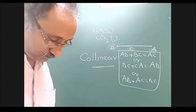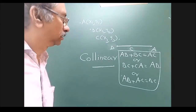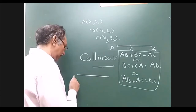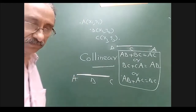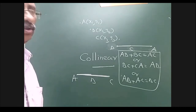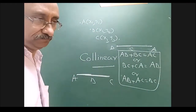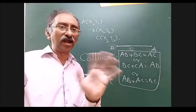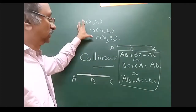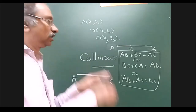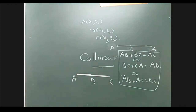AB + BC = AC means B is in between A and C. The diagram shown was for BC + CA = BA. So all three conditions cannot happen simultaneously; exactly one of them happens. If exactly one happens, the three points are collinear. If none happens, they are not collinear and won't lie on a straight line.